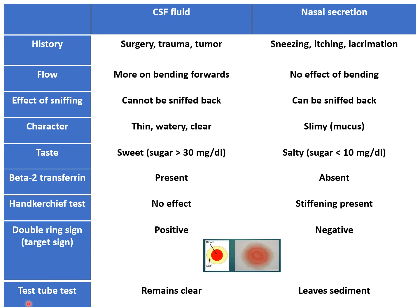Another test is the test tube test. The nasal secretions are collected in a test tube and allowed to stand. Irrespective of time, CSF will remain clear. But after some time, nasal secretions will show a deposition of sediment in the test tube. This differentiates CSF from nasal secretions. Now there are also specific radiological investigations such as MR cisternography and CT scan of paranasal sinuses, which can clearly identify the site of the leak and differentiate CSF leak from any other nasal pathology.